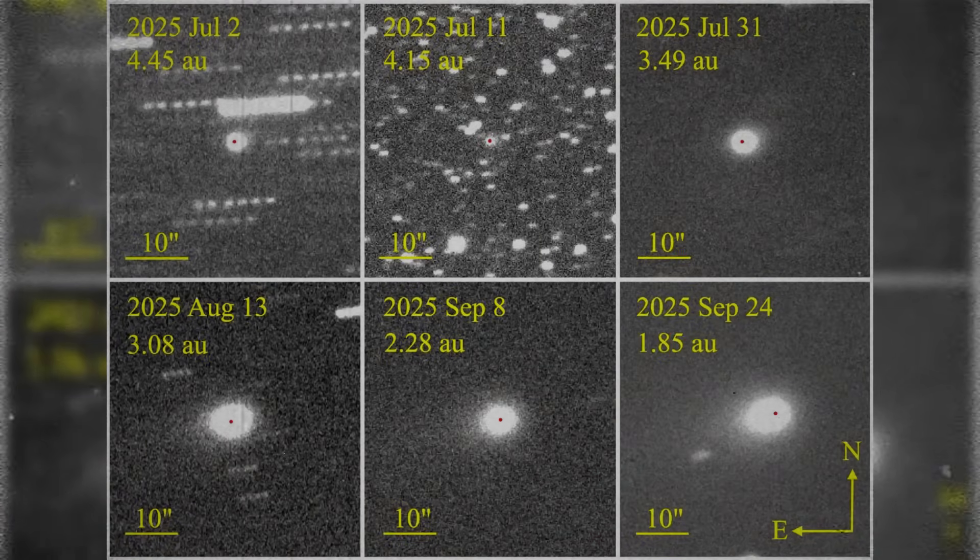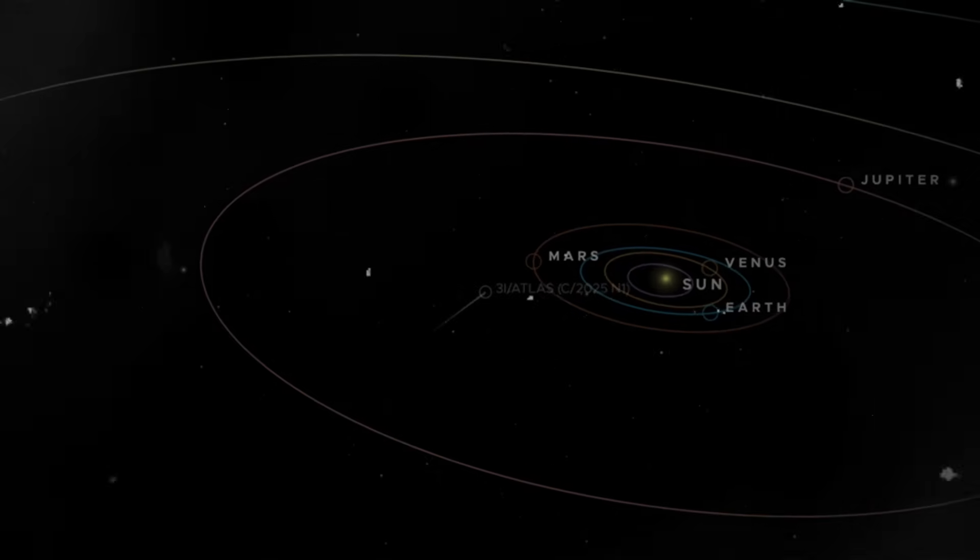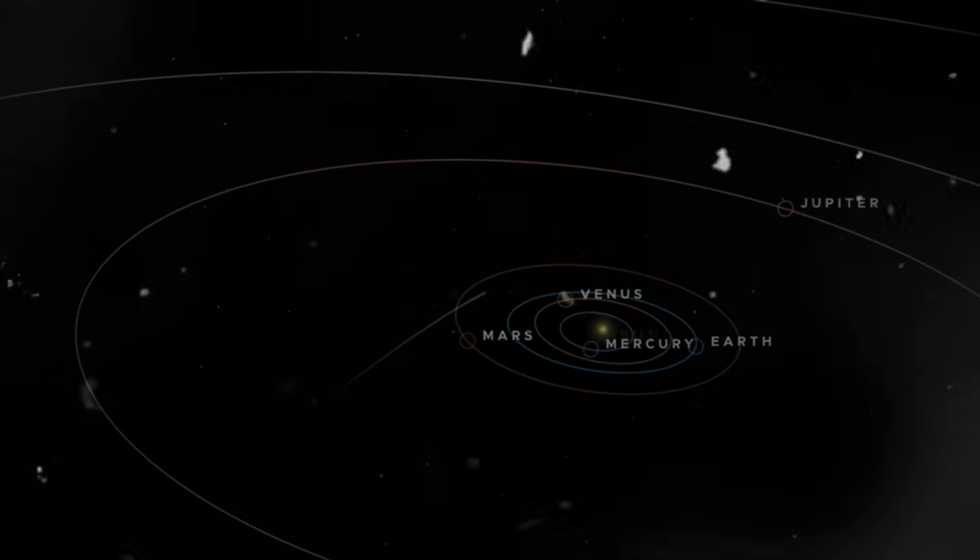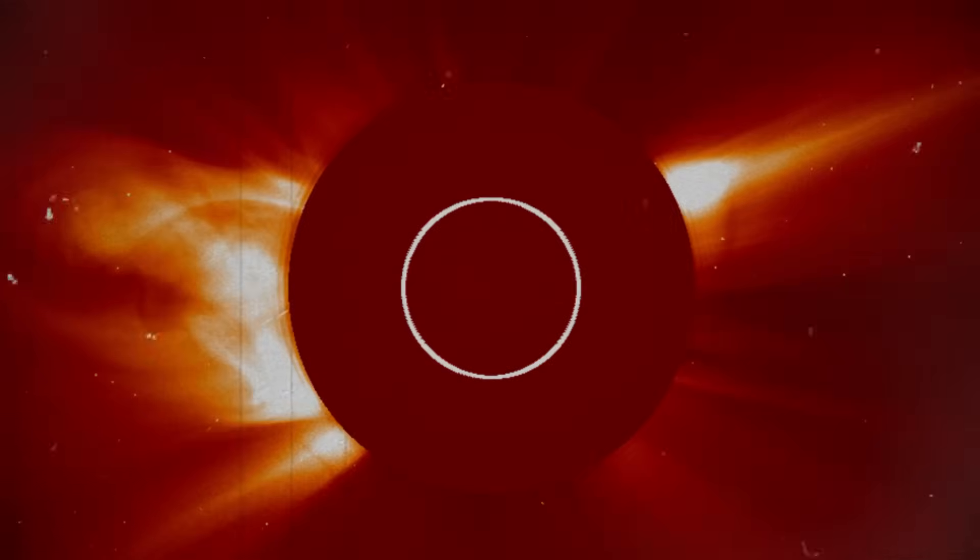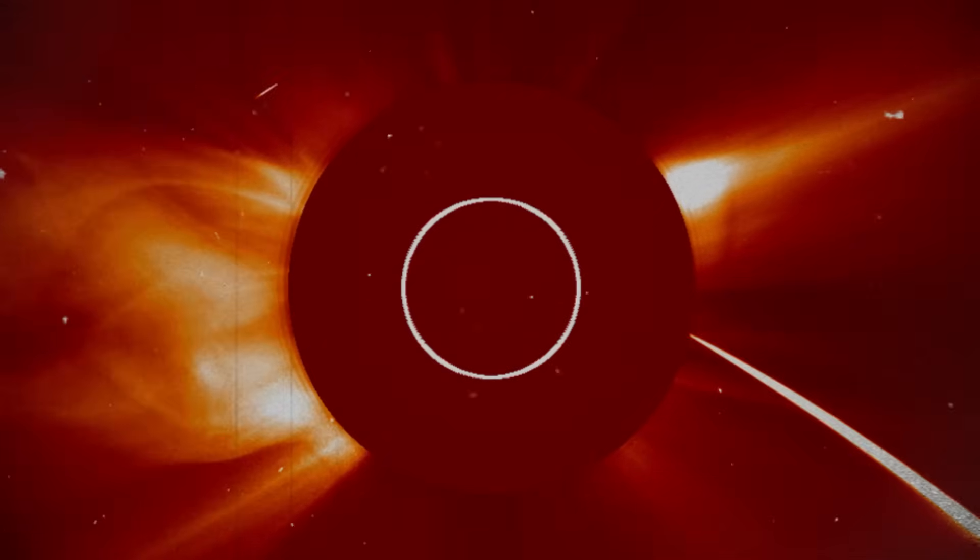One of the most surprising developments in the new dataset is the confirmation that C2014-UN271 has begun releasing material long before it should. Objects this large and this distant usually remain dormant until they enter regions of the solar system where sunlight becomes strong enough to penetrate their outer crust. But UN271 defies that expectation. It has begun venting material in a slow, steady outflow, forming a wide, faint halo around its surface. This halo is not chaotic. It expands uniformly, almost like a controlled breathing cycle rather than a random eruption.